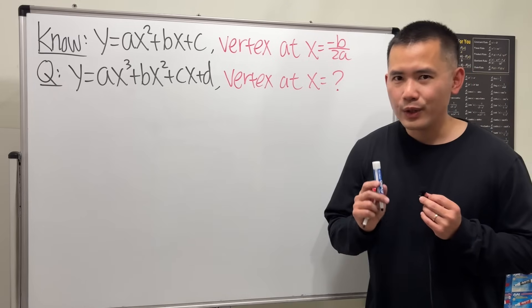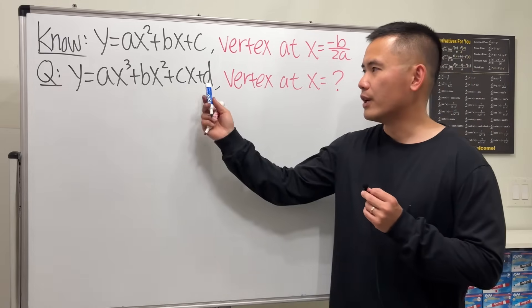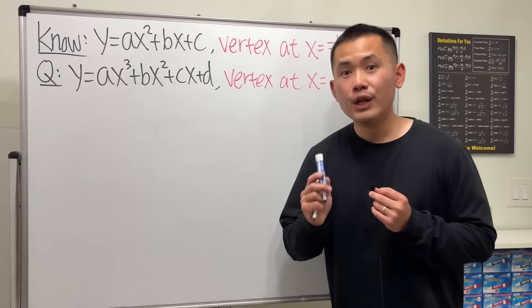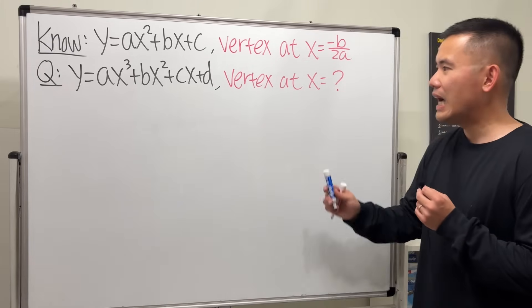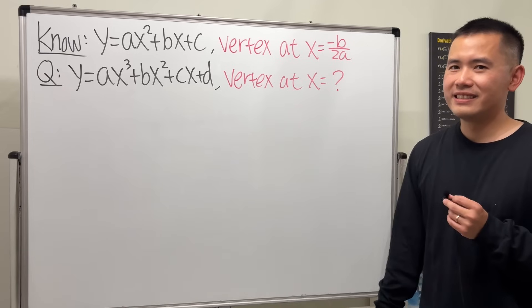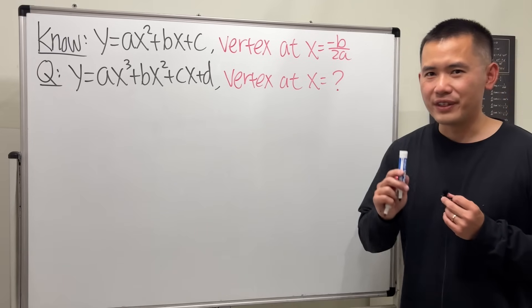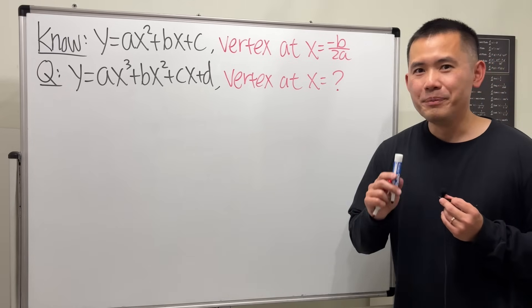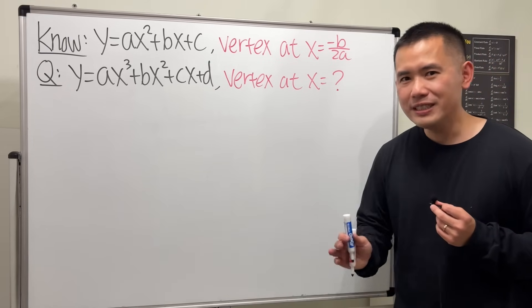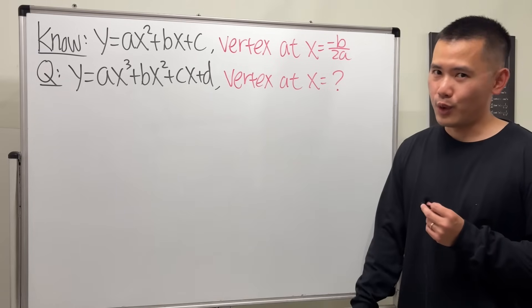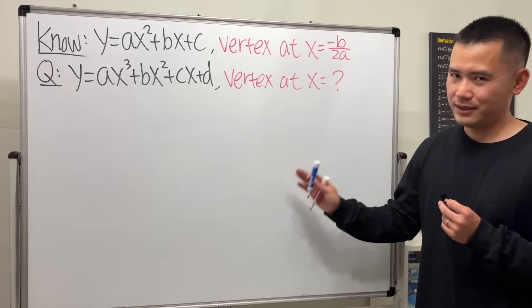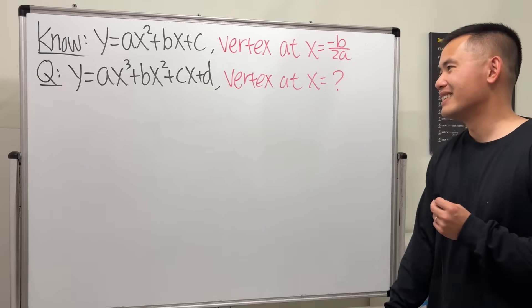But what if we have a cubic equation instead? Do we still have a very nice formula for its vertex? The answer is yes, because that formula looks very similar to the quadratic formula. So today, let's talk about that.